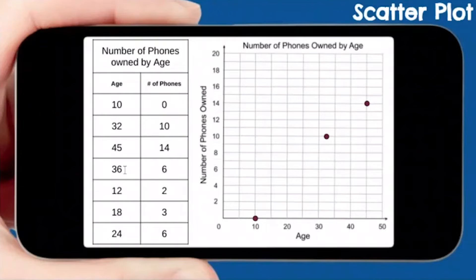A 45-year-old had 14 phones. So 45, up to 14. A 36-year-old had 6 phones. So over to 36, up 6. A 12-year-old had 2 phones. I don't know why a 12-year-old already had 2 phones, but they did. So 12, up 2. An 18-year-old had 3 phones. Up 3. Pretty easy, right? A 24-year-old had 6 phones. 24, up 6. All right, that is basically it. That is all there is to a scatter plot.